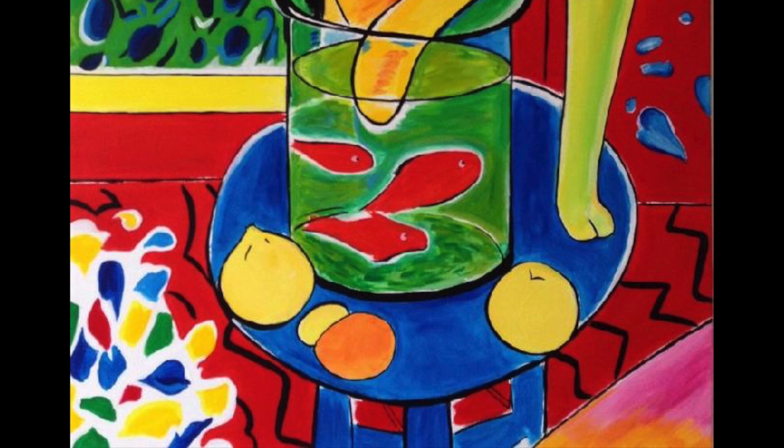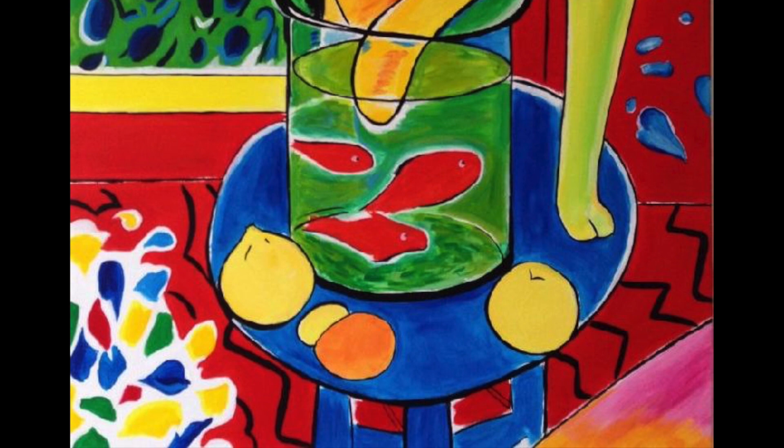Matisse loved painting goldfish because of their bright colors and how mesmerizing it is to watch fish swimming in a fishbowl. Here is a photo of Matisse's painting The Cat with Red Fish.